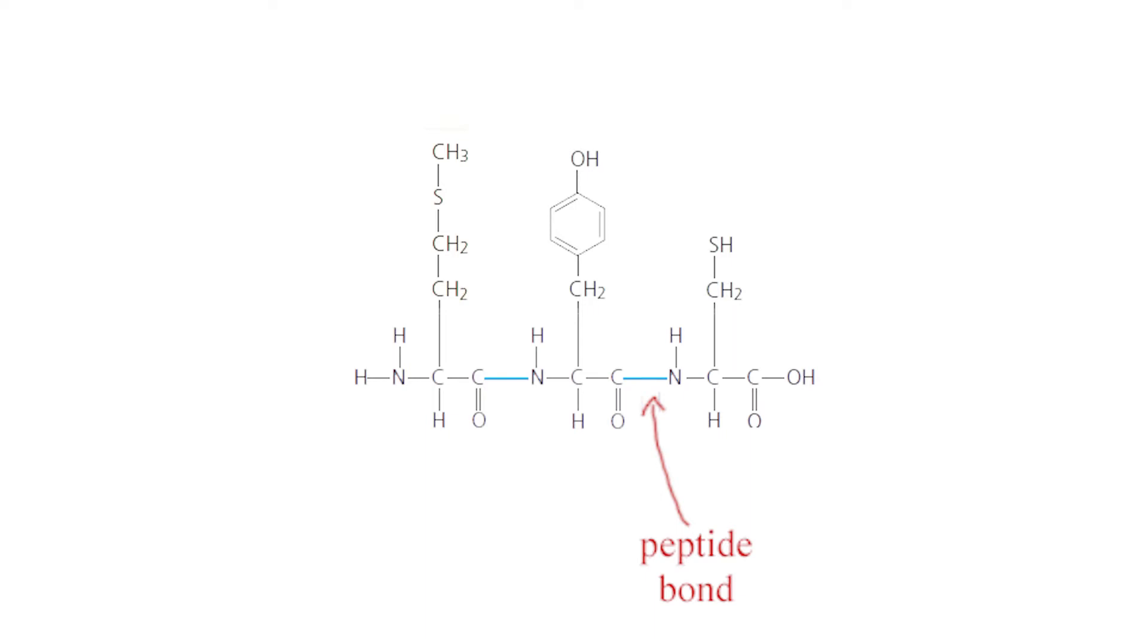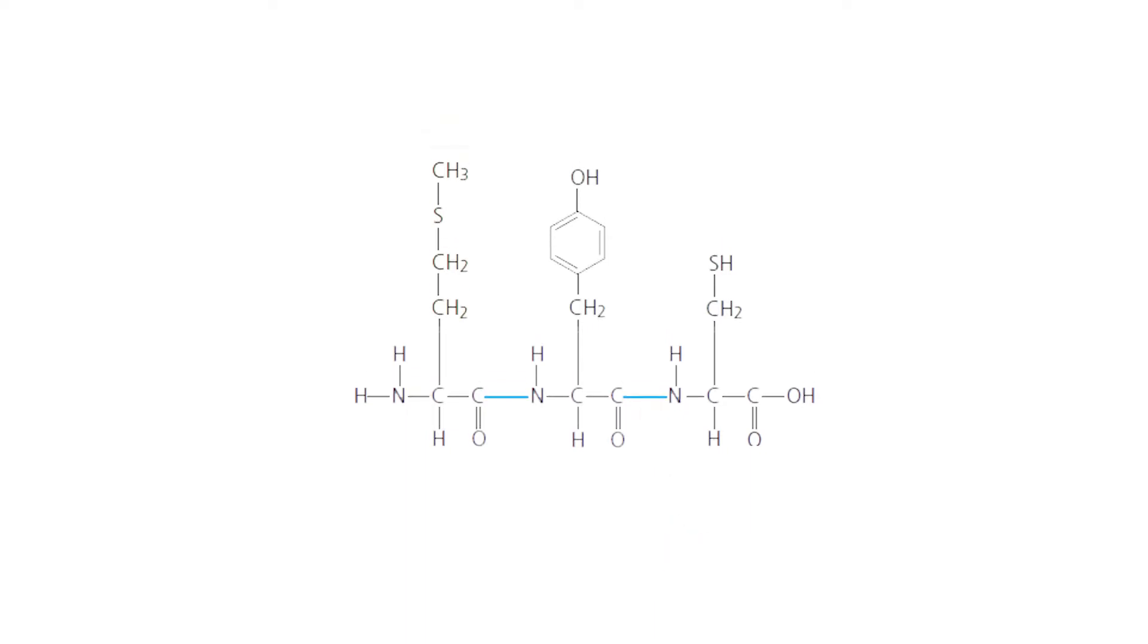This process is repeated over and over in order to form longer polypeptides. The beginning of the polypeptide, or where the amino group on the first amino acid is still exposed, is called the N-terminus, while the end, or where the carboxyl group on the last amino acid is still exposed, is called the C-terminus.